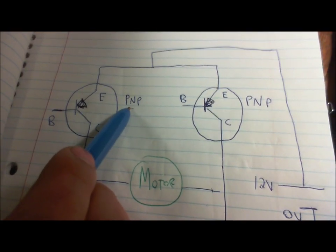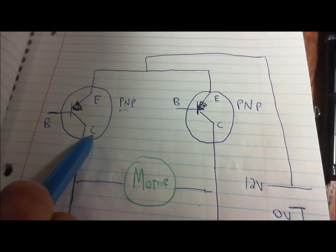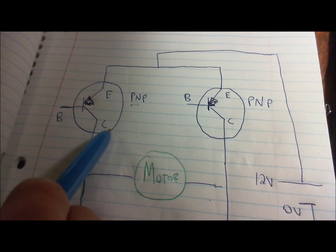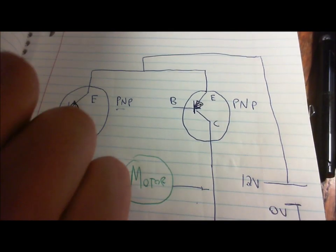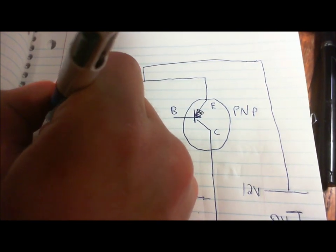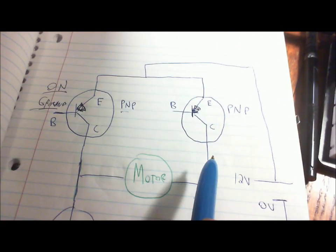So in a PNP transistor, current flows from the emitter to the collector. And a PNP transistor is turned on when you ground it. So when you ground it, it's on.